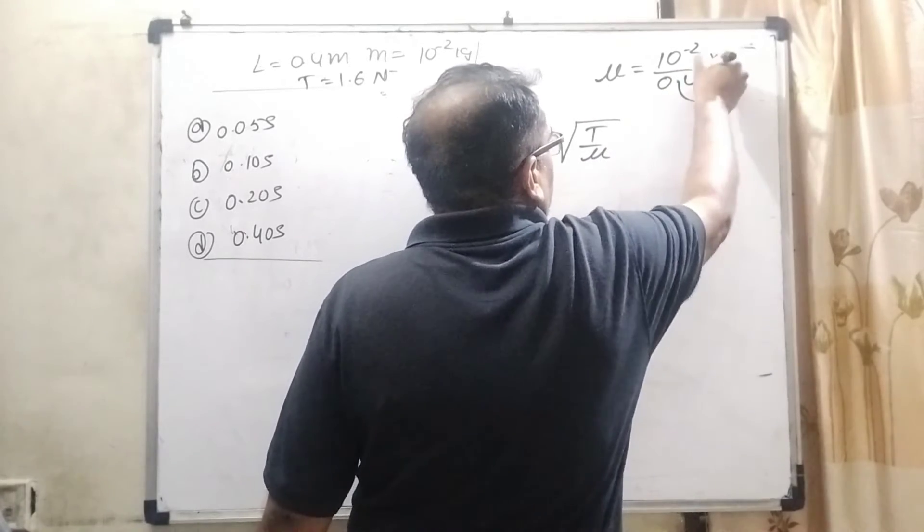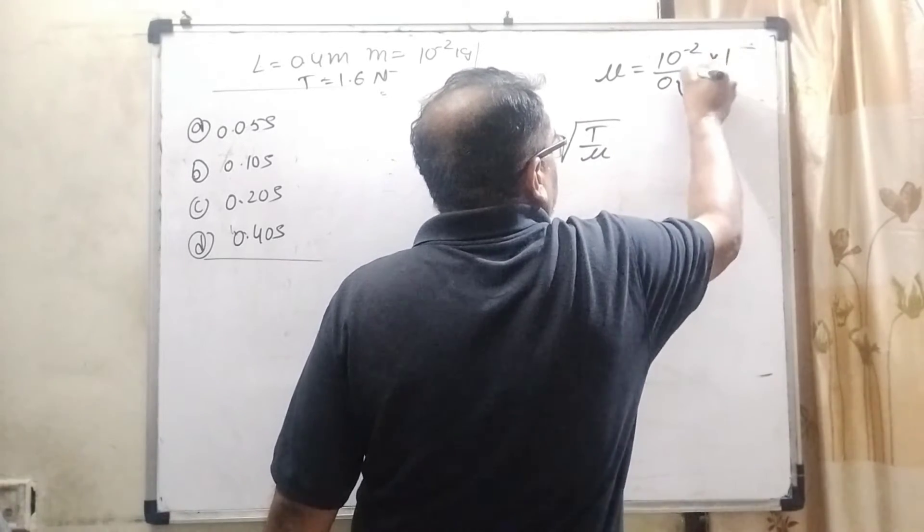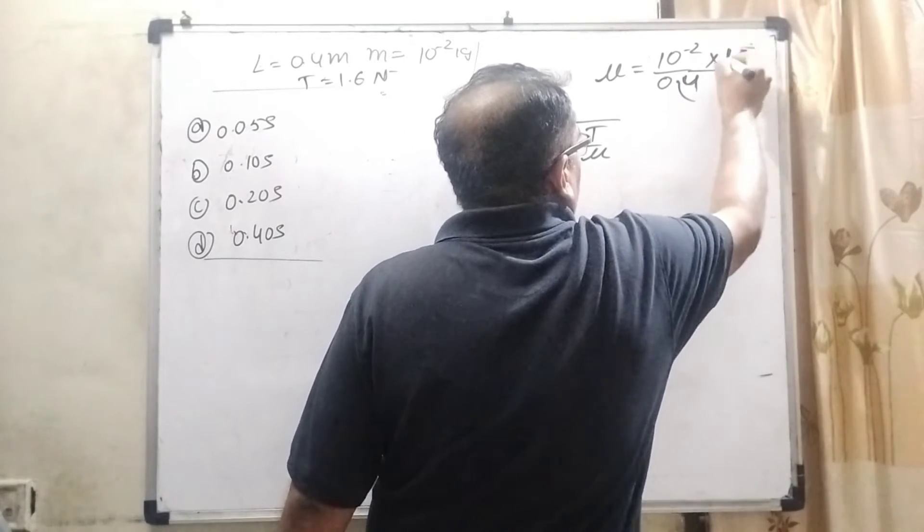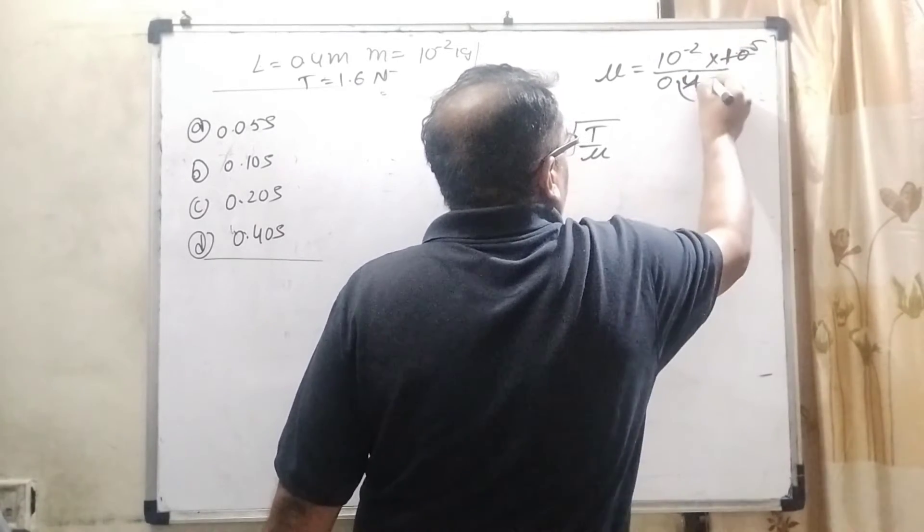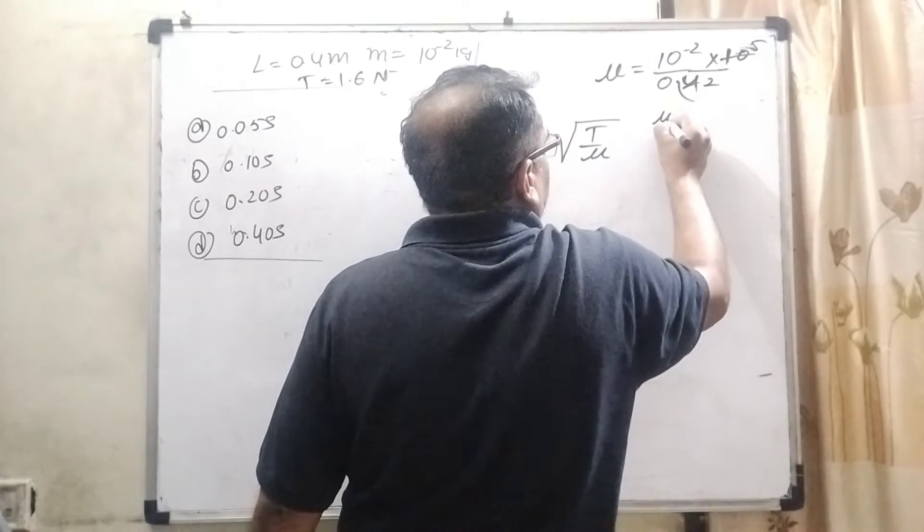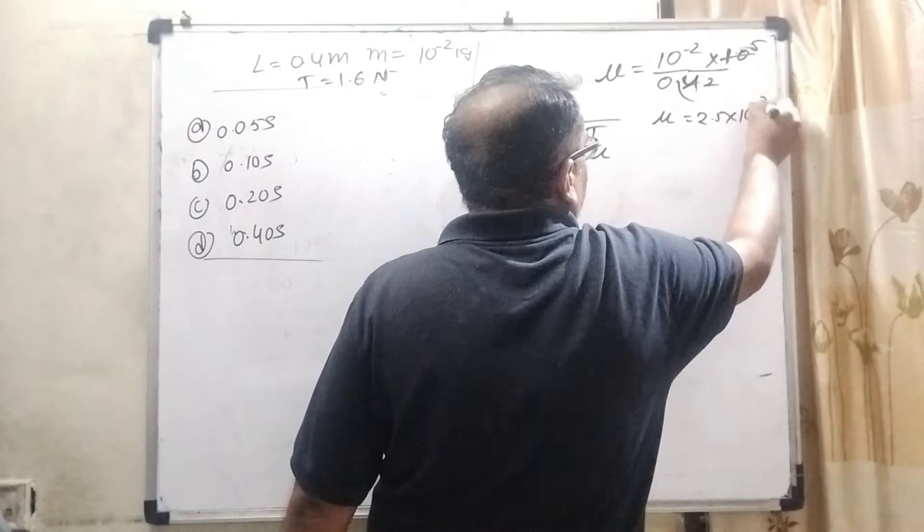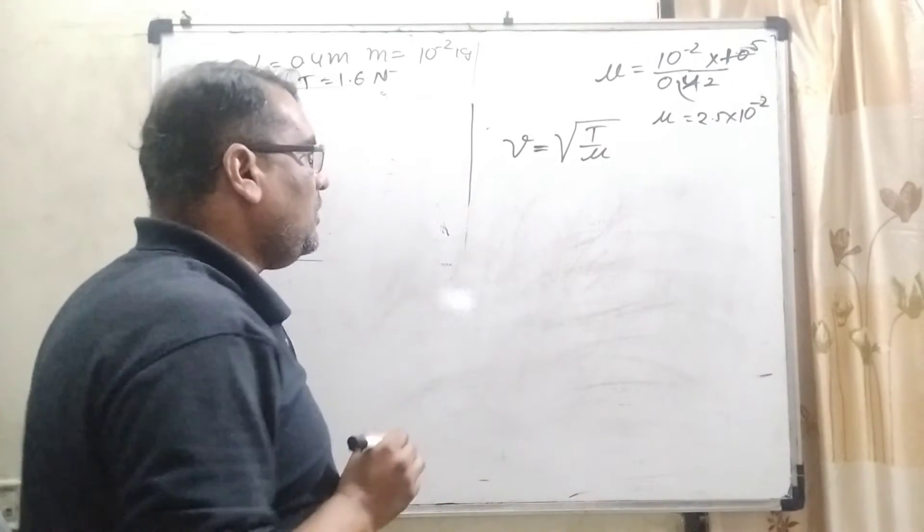This decimal is removed and by applying, we get 10^-2 divided by 0.4. After calculation, 0.4 is 4 by 10, so we get μ equal to 5 by 2, which means 2.5 into 10 raised to the power minus 2.